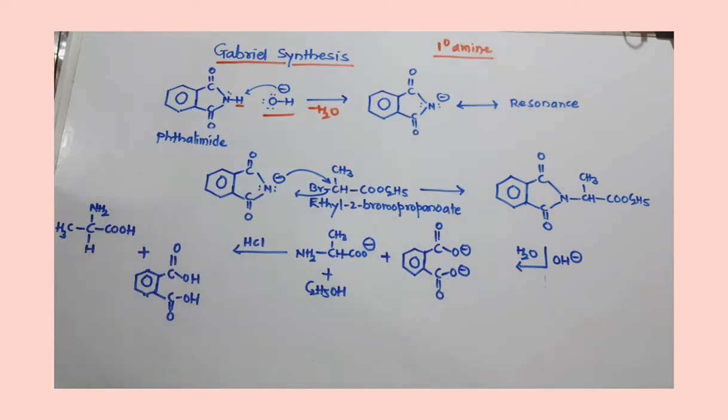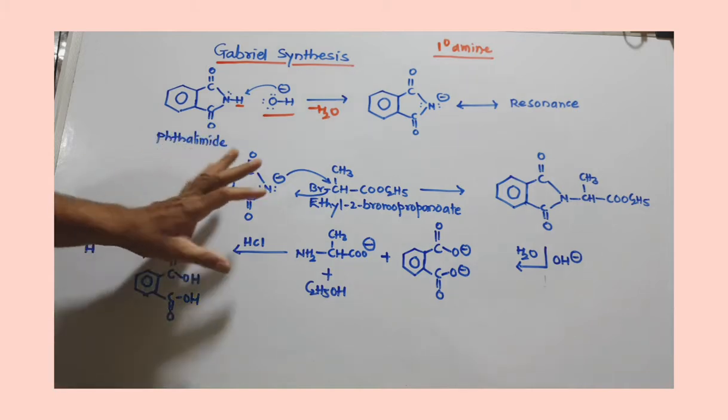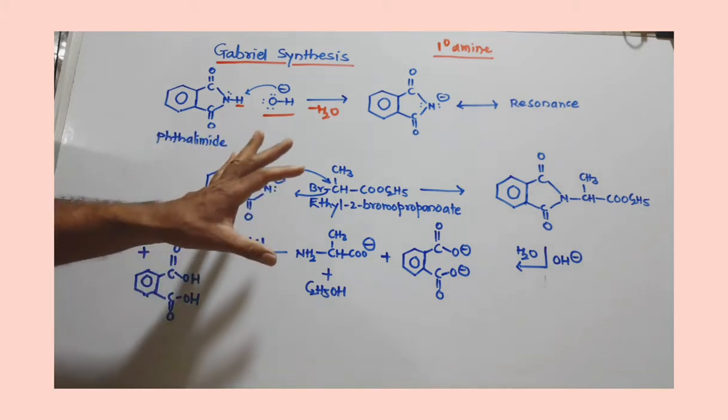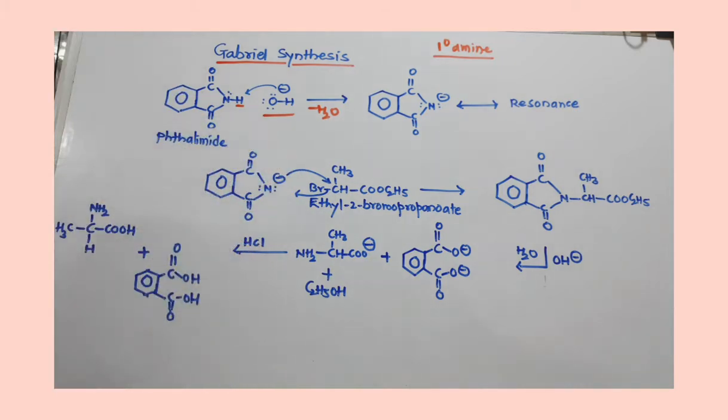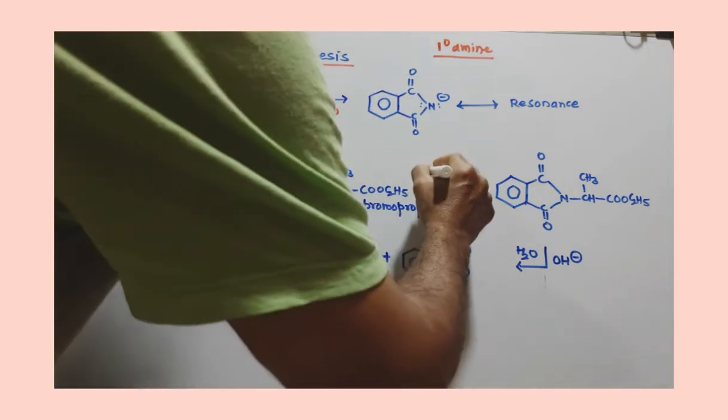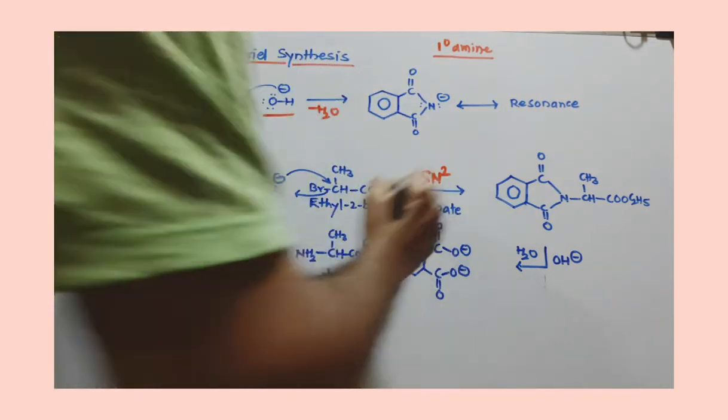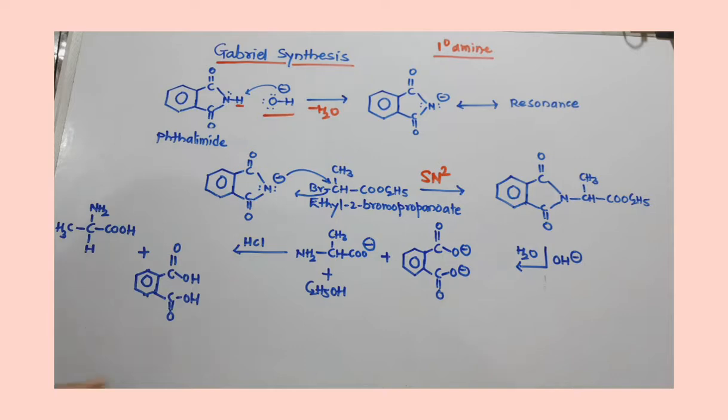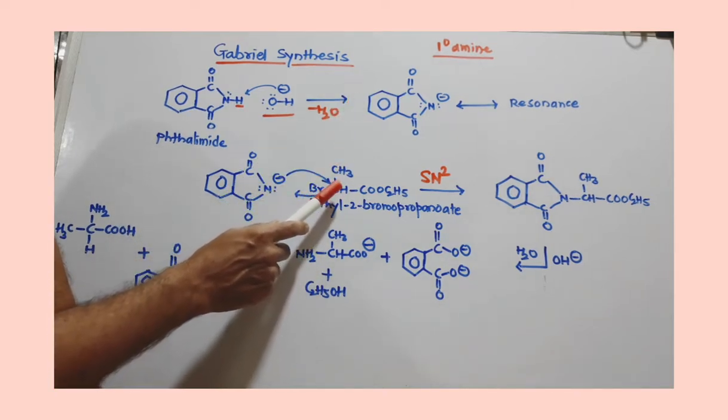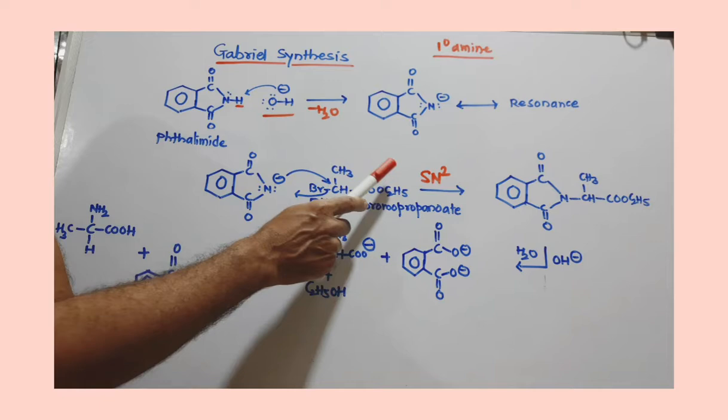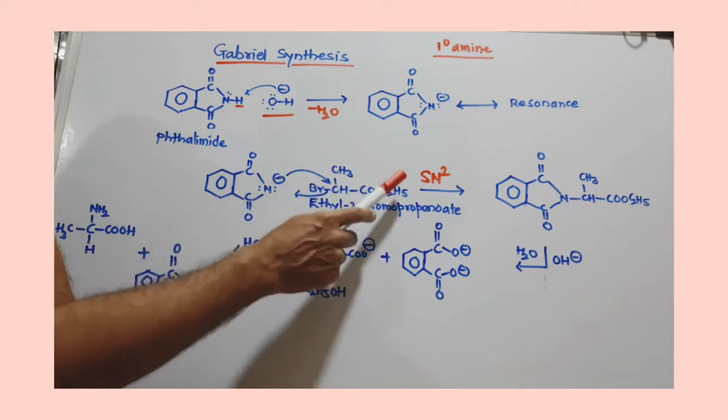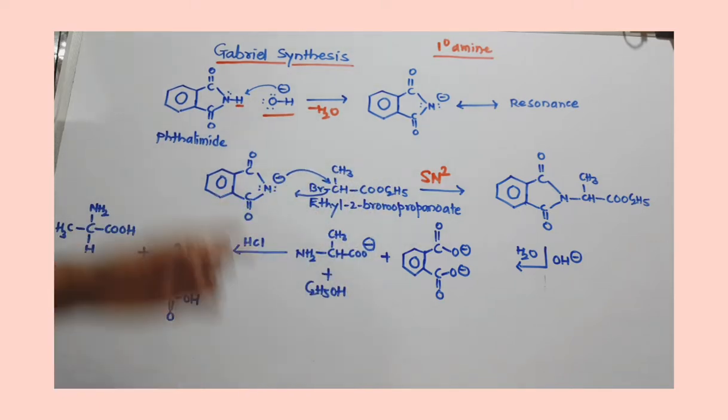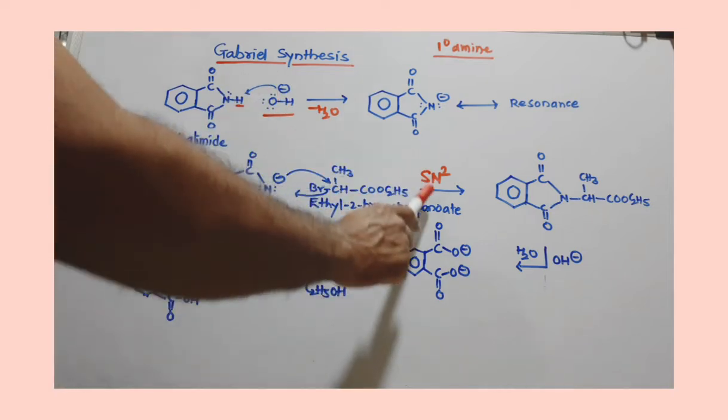You can see here, this is nothing but the SN2 type reaction, nucleophilic substitution reaction. So you can say this is SN2 type attack, SN2 type reaction. Now we are using alpha-halo-ester, and we have selected this ester purposefully by considering that it will give alanine. So accordingly you have to select the ester. This is very crucial part of this synthesis.